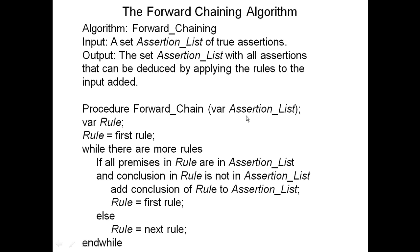Here's the procedure — it's called forward chain. It takes as input the assertion list. I use a pseudocode similar to Pascal, where VAR means it's a pass-by-reference variable that you can change. I use the keyword 'procedure' when it is a procedure and 'function' when it is a function. There are local variables — a local variable called 'rule.' I let rule become my first rule, and then while there are more rules, I check the rules in sequence. If all premises in the rule are in the assertion list — meaning all premises are true — and the conclusion is not already in the assertion list, then I add the conclusion of the rule to the assertion list.